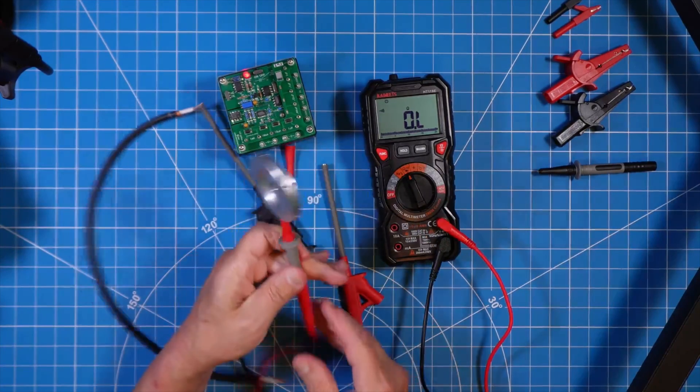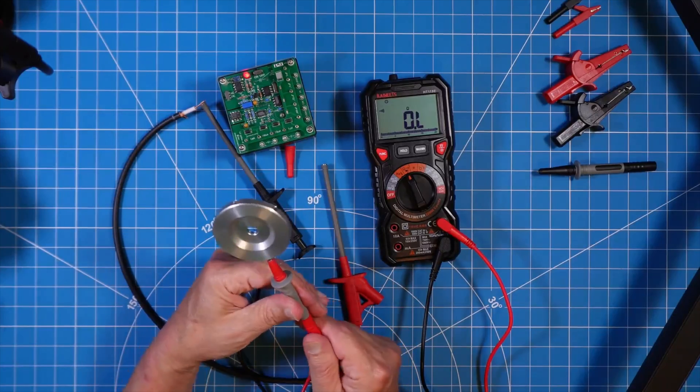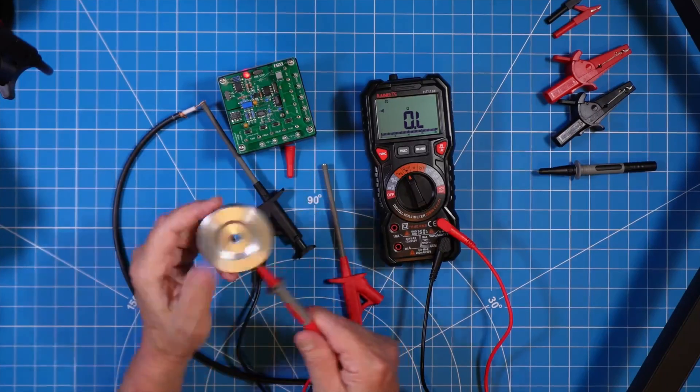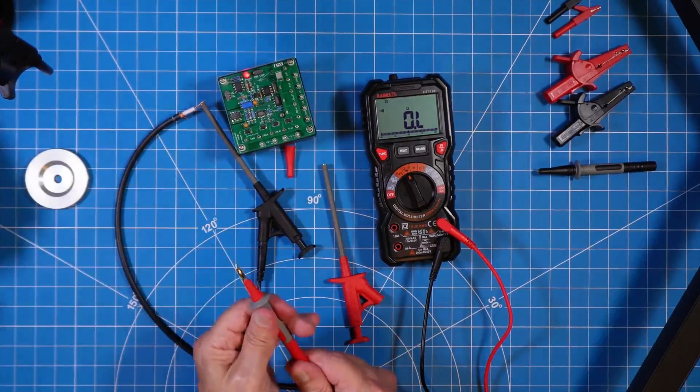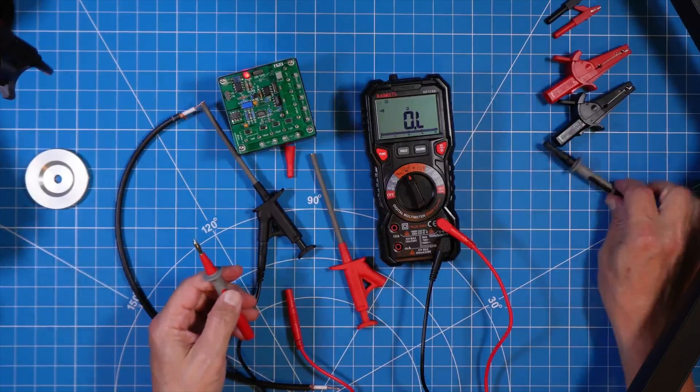So wherever you would have a banana plug connector, you would be able to use this probe set. And it comes of course in a matched pair.